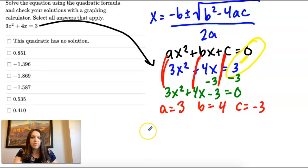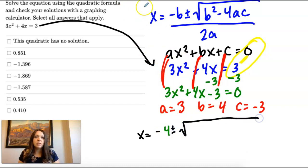Okay, so now plug it in. So x equals negative b, which is 4, plus or minus the square root of b, which is 4, squared.